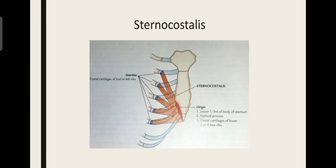We saw that intercostalis intimus lies only in the middle two-fourths of the space, so the anterior and posterior spaces are vacant. To fill these, two muscles are present: sternocostalis anteriorly and subcostalis posteriorly. Together they form the entire covering which we call transversus thoracis collectively. The direction of the fibers of sternocostalis goes upwards and laterally — from the midline towards the lateral aspects.